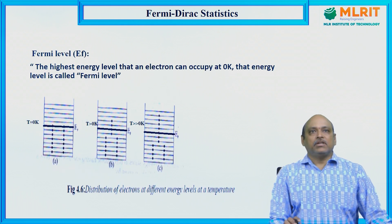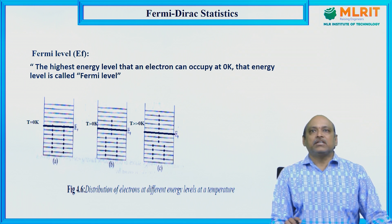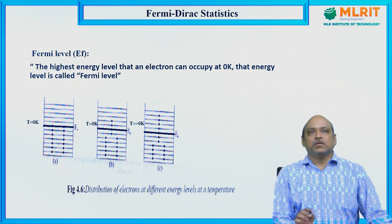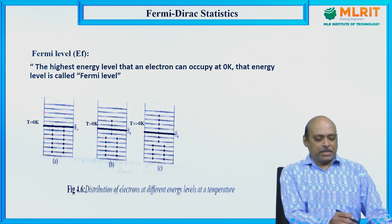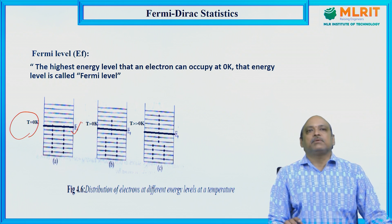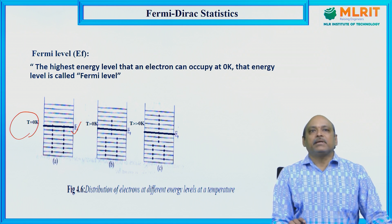As we know, the Fermi energy level is the highest energy level that an electron can occupy at 0 degree Kelvin. In general, we take this as the Fermi energy level, denoted EF. This is the basic requirement you must know before understanding Fermi Dirac Distribution Law.